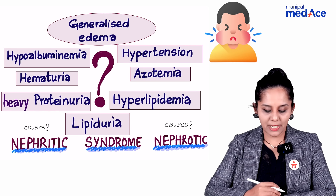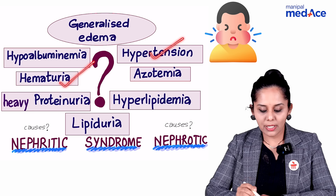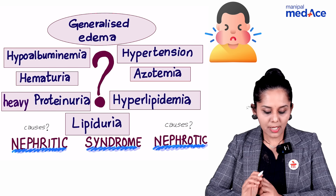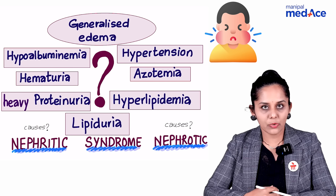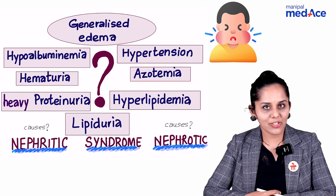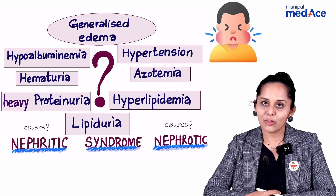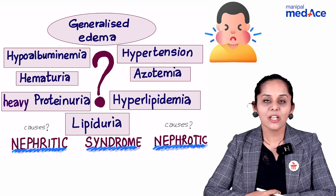If a patient has hypertension, hematuria, azotemia along with mild proteinuria, then we are dealing with nephritic syndrome. The common causes include post-infectious glomerulonephritis, rapidly progressive glomerulonephritis, and cases of IgA nephropathy and membranoproliferative glomerulonephritis.